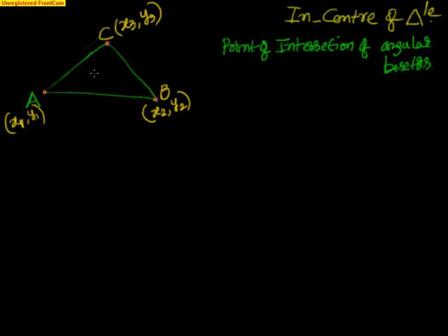Suppose from vertex C, this is the angle ACB, and I want to divide it into equal halves. That means angle ACD is equal to angle BCD — that is nothing but an angular bisector. This is one angular bisector. Now let me draw another angular bisector.